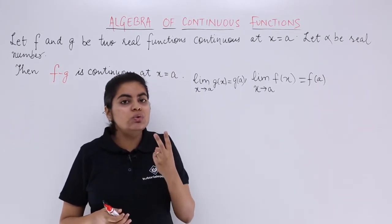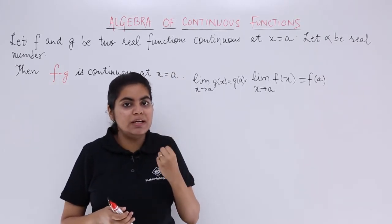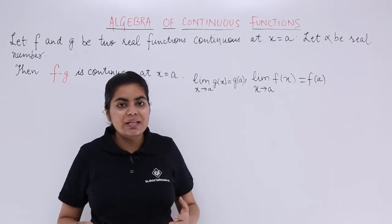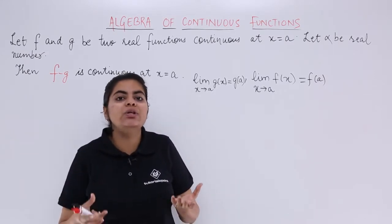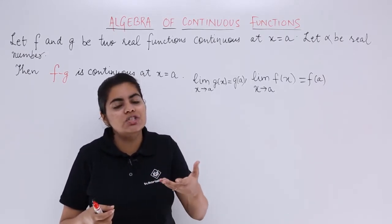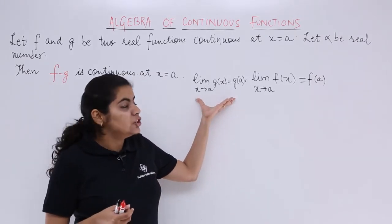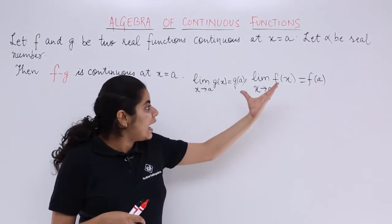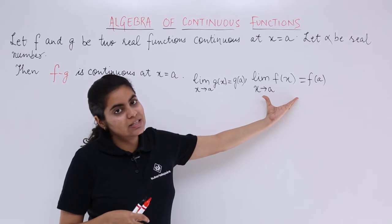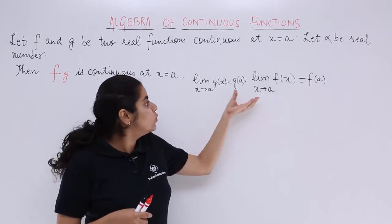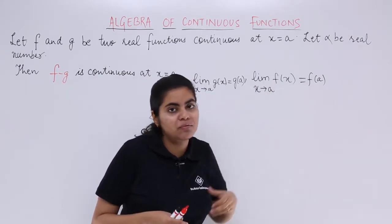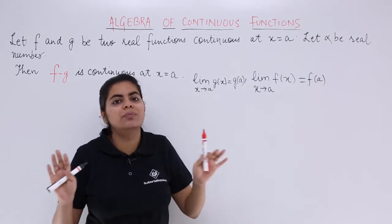Now whenever two functions are said to be continuous, that means what? That means their limit is equal to the value of the function at that point. That means limit g(x) at x tends to a and limit f(x) at x tends to a will be equal to g(a) and f(a) respectively from the previous video.